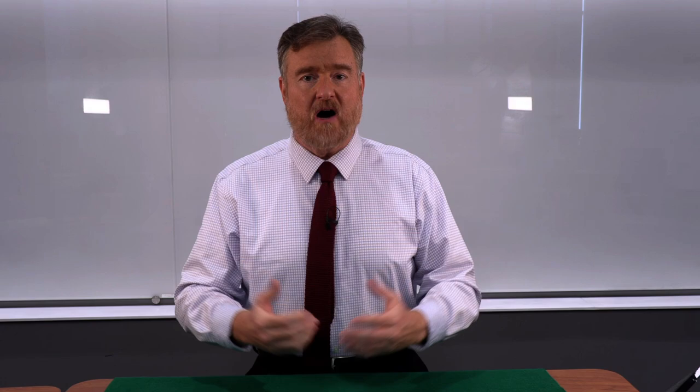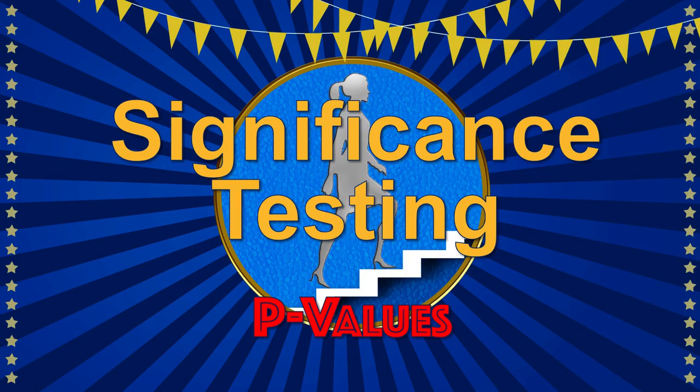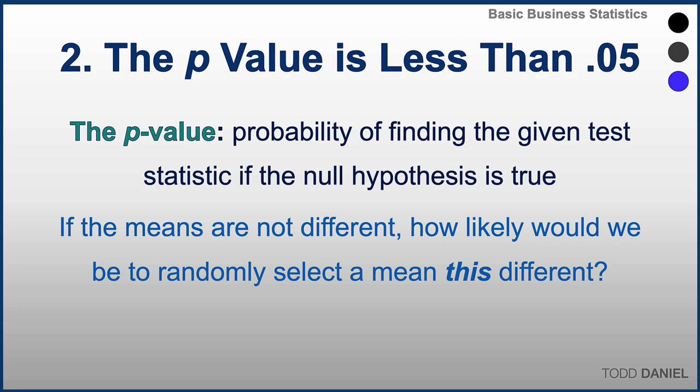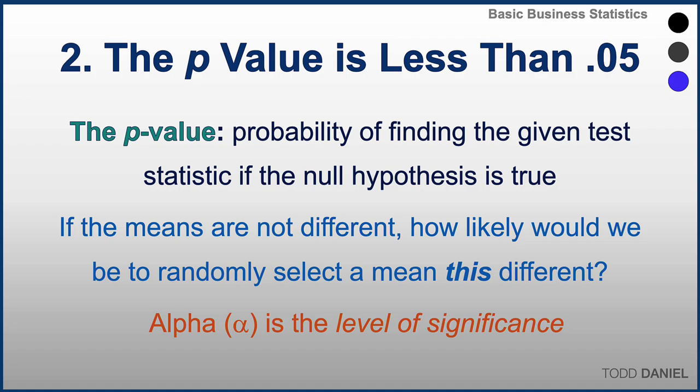A second way to select a criterion for significance is by looking at probabilities using significance testing. In this case, we compute probabilities as evidence against the null hypothesis. The probability value, or p-value, is the probability of finding a given test statistic if the null hypothesis is true — how likely is it that we would randomly select a sample with this mean purely by chance. Alpha is the level of significance, typically 0.05 or 5%, though there are other options.